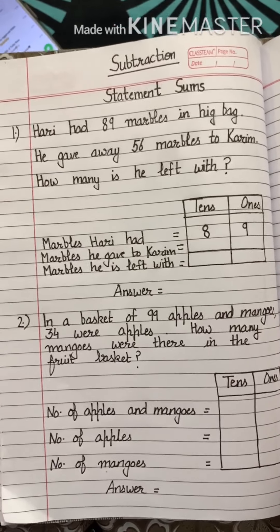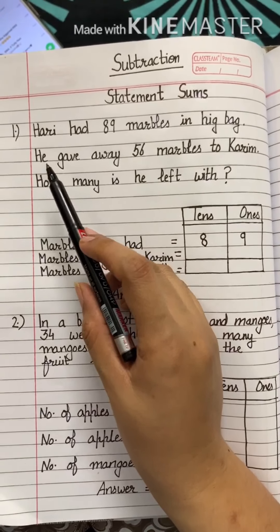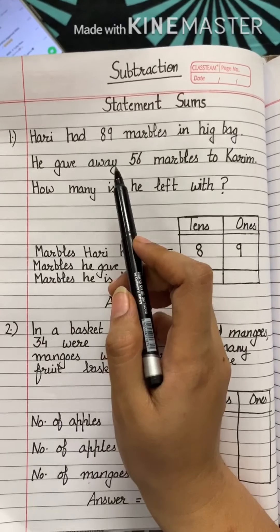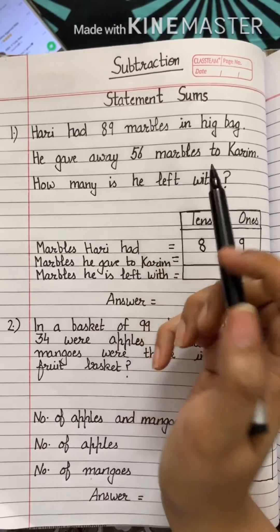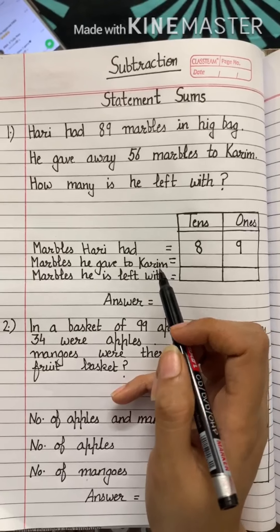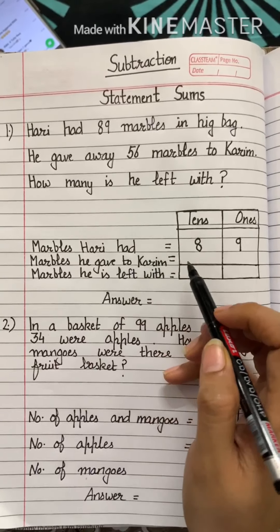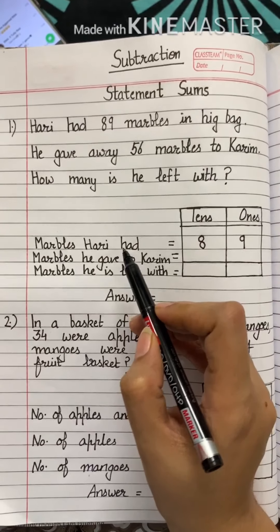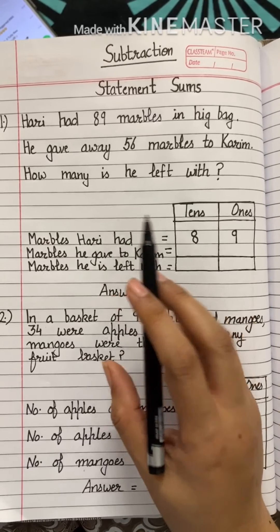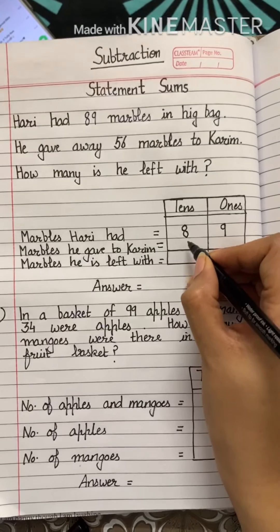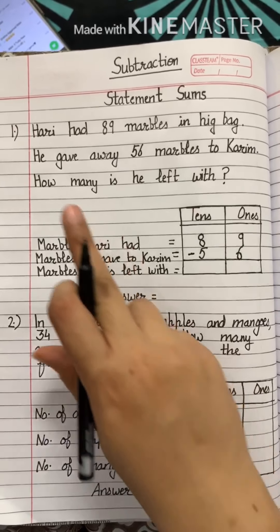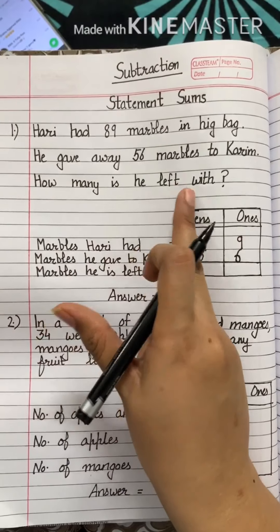Then let's read the next line: he gave away 56 marbles to Kareem. So in the next line we will write 'Marbles he gave to Kareem.' I read the first line — that was the first part of my statement. I read the second line — that was the second part of my statement. So it's very easy to find out how you will write the statement part. How many marbles he has given to Kareem is 56.